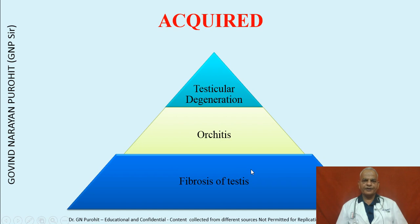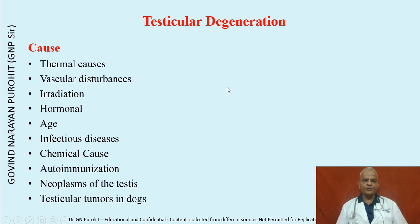Acquired testicular pathologies include testicular degeneration, orchitis, and fibrosis of the testes. Testicular degeneration can occur because of thermal causes, vascular disturbances, irradiation, hormonal changes, age, infectious disease, chemical causes, autoimmunization, neoplasm of the testes, and testicular tumors in the dog.